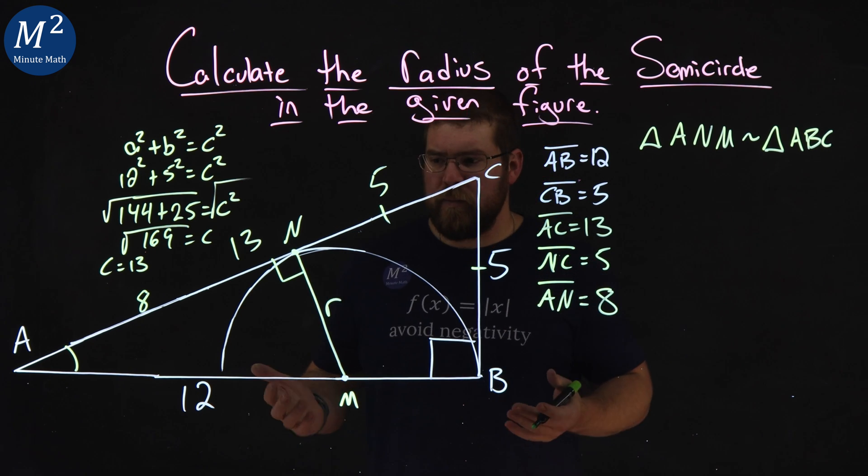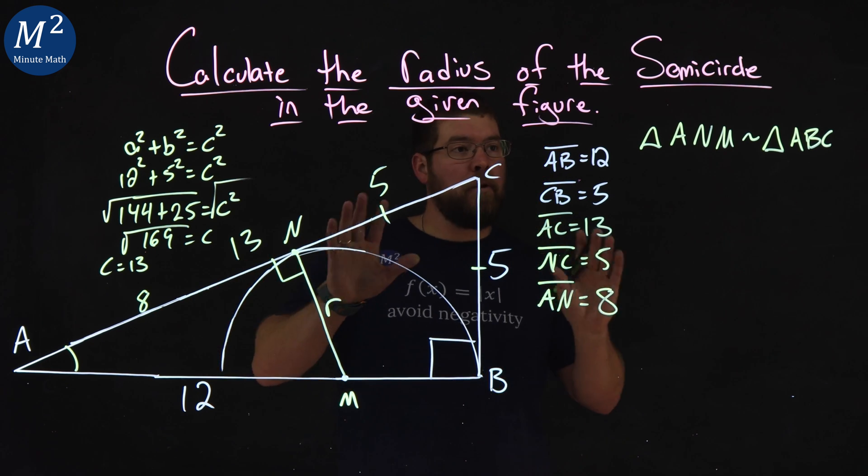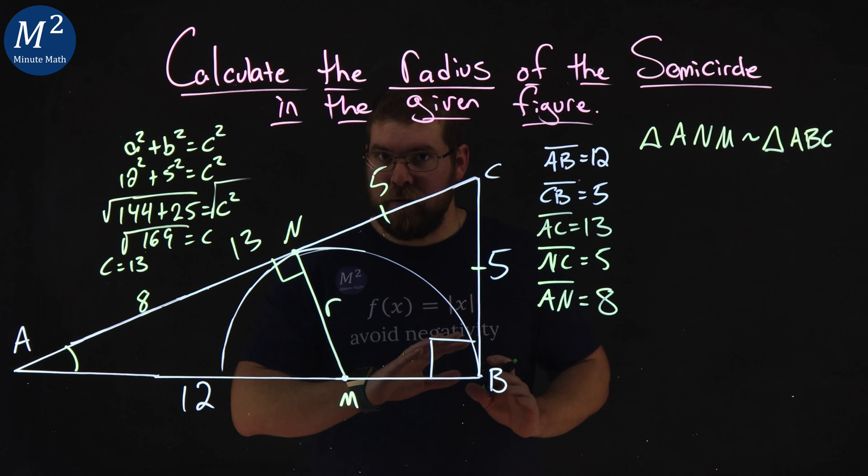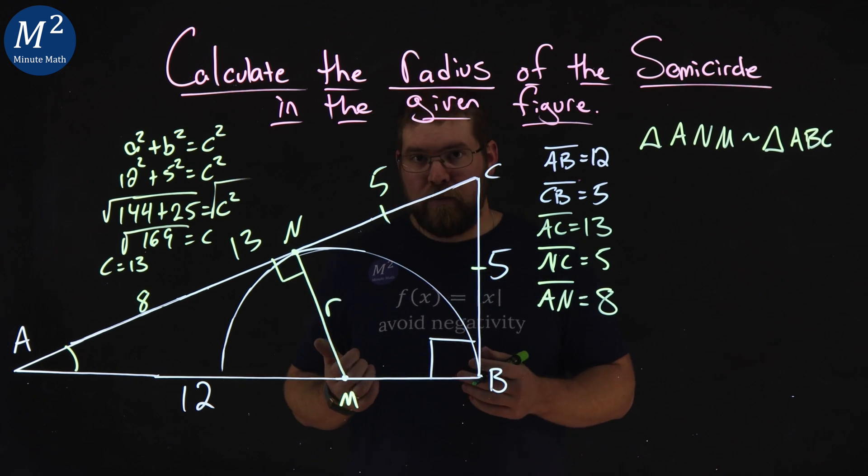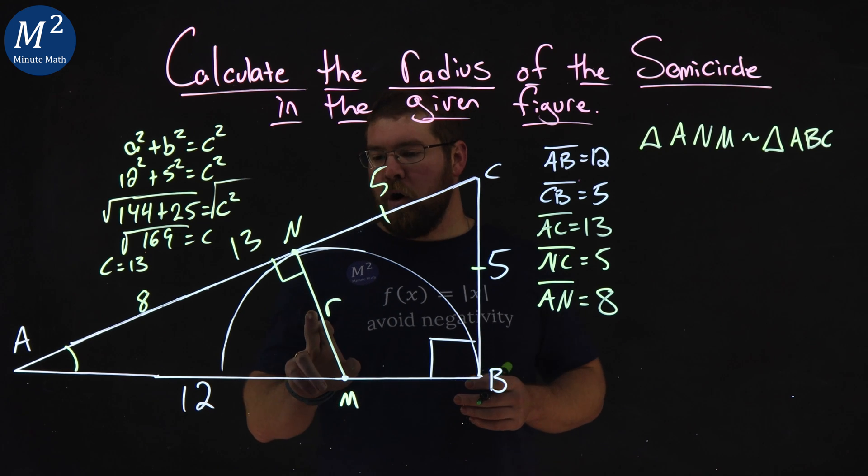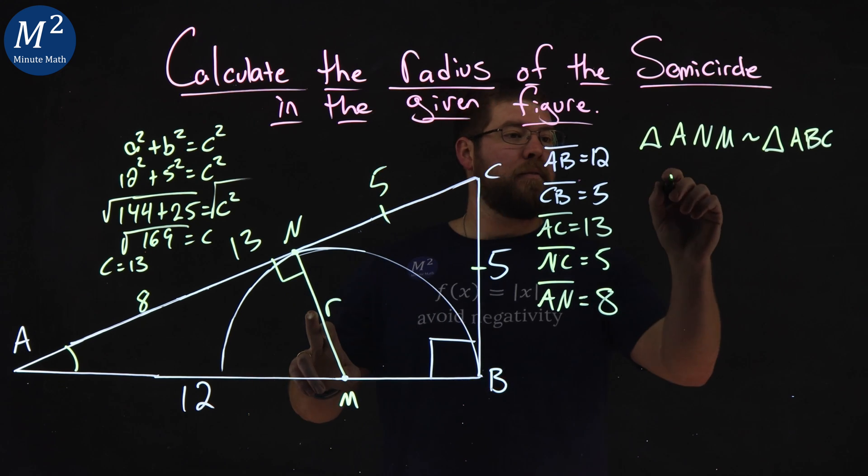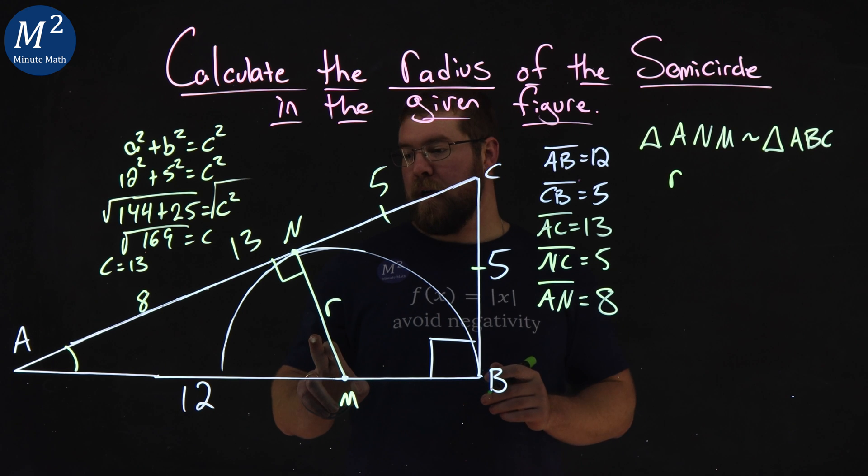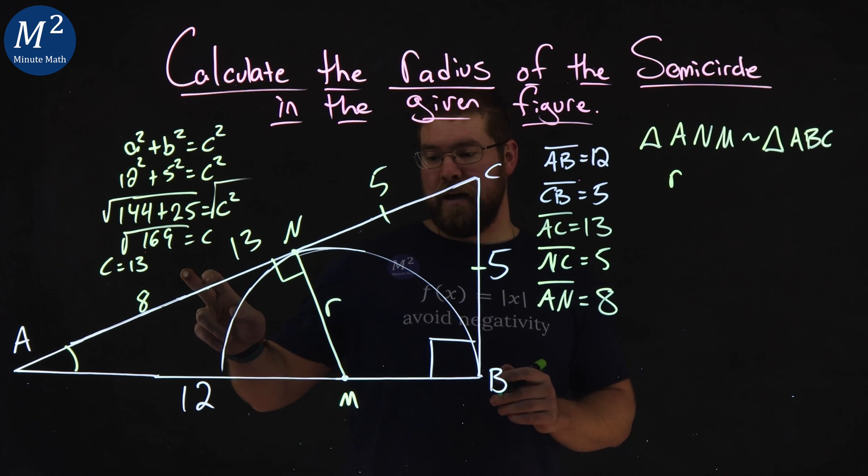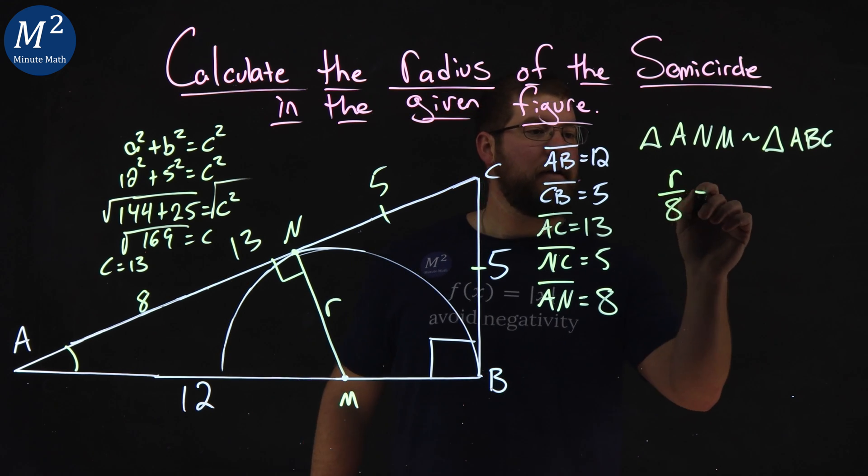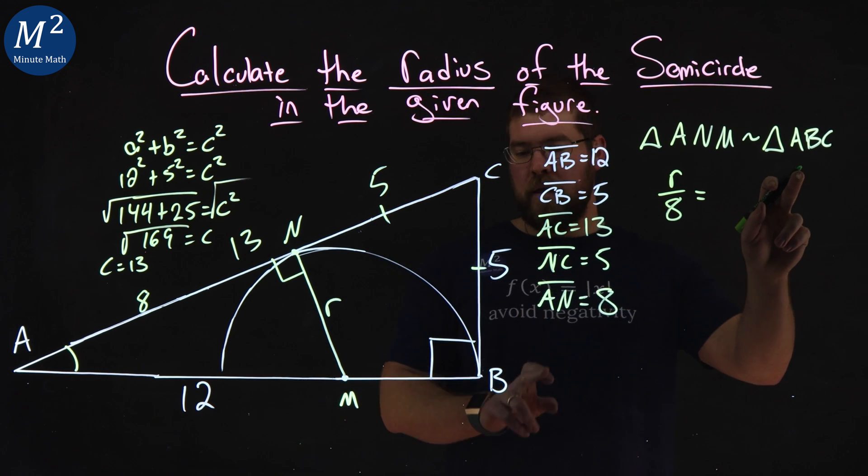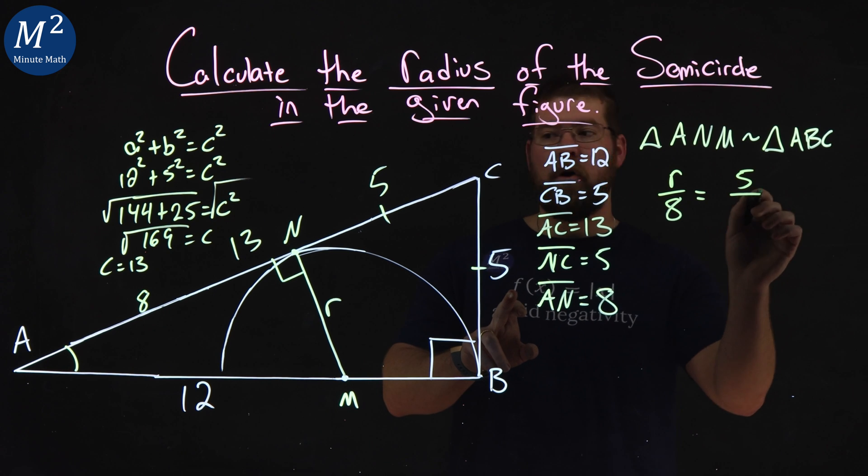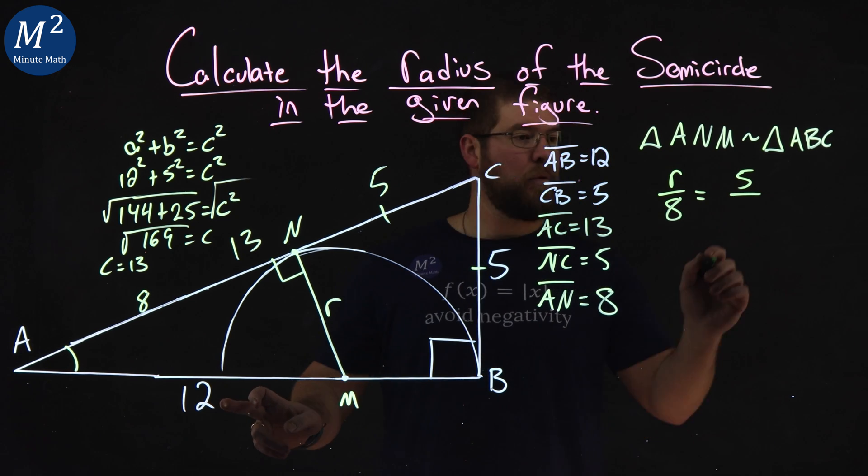So, how does that help us? Well, since both triangles we know now are similar, we can write them as a proportion for their side lengths. So, we have R, the short length of this triangle, and its long leg, R over 8, is equal to the short leg here of the larger triangle, that's 5, over the long leg, which is 12.